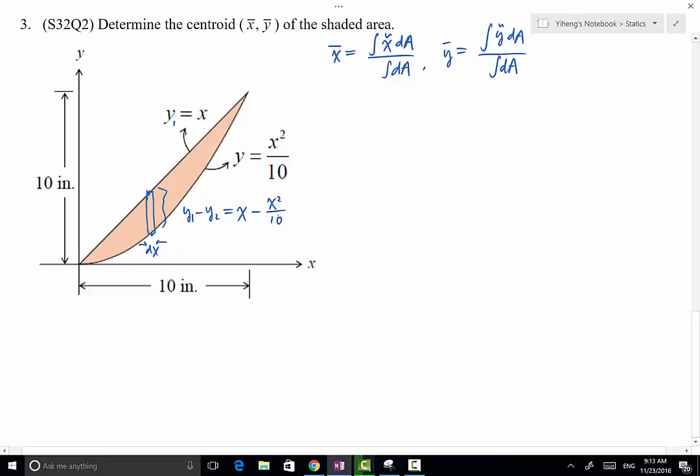Therefore dA, the area of this rectangle, equals its height multiplied by its width. So that's going to be x minus x squared over 10 multiplied by dx. But what about its centroid location x-tudor y-tudor? This is a rectangle, therefore its centroid is right here. The x location is simply x, therefore x-tudor equals x, because this location is arbitrary variable x.